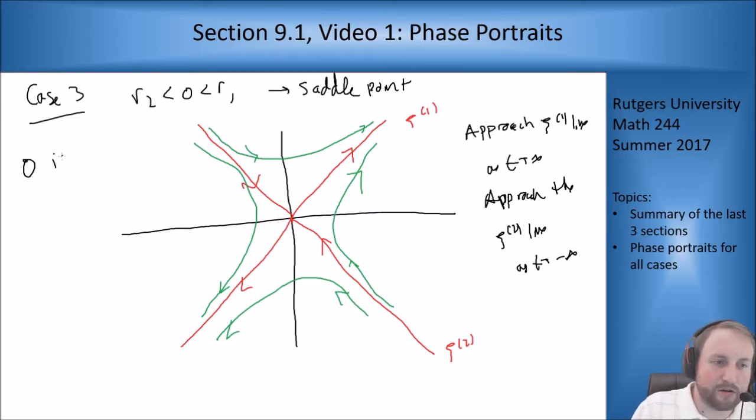In this case, we see that zero is unstable because any point anywhere nearby is going to take off as t goes to infinity. If t goes to infinity, it's going to follow the c1 line further and further away. So zero is unstable here as well.